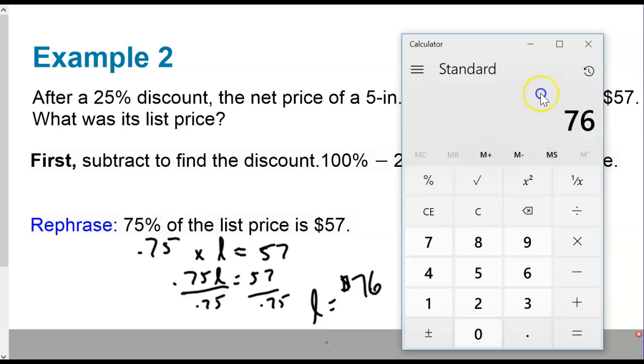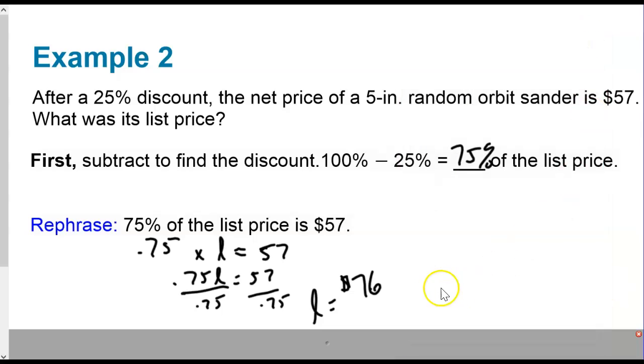So the list price equals $76. Again, always make sure to go back. Does that make sense? Yep, $76 is more than 57, and it's about 25% more. Yeah, sure, that makes sense. Great. Okay, let's go ahead and look at the next one.